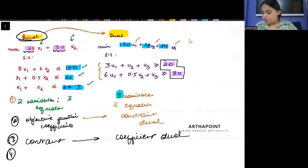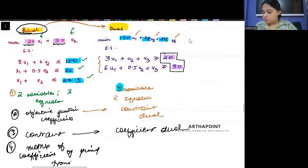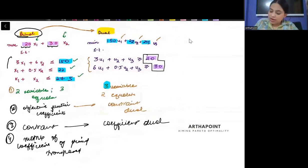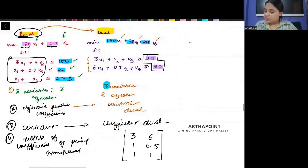Fourth part: the matrix of coefficients of primal will be transposed. If you look and convert this into a matrix, the matrix is 3, 6, 1, 0.5, 1, 1. This matrix is being created. So I have to transpose this.